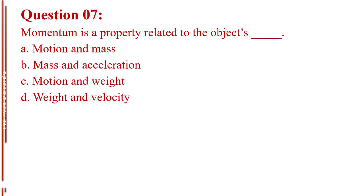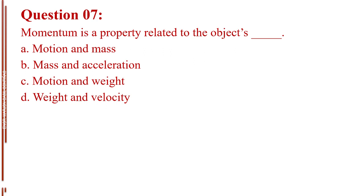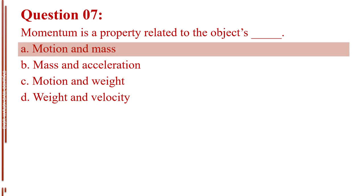Question number 7. Momentum is a property related to the object's blank. Letter A, motion and mass. Letter B, mass and acceleration. Letter C, motion and weight. Letter D, weight and velocity. The answer is Letter A, motion and mass.